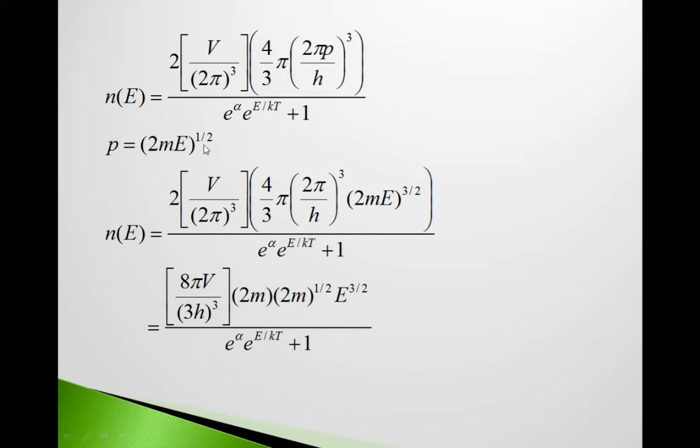This p = (2mE)^(1/2). So n = 2V/(2π)³ × 4/3 π(2π/ℏ)³(2mE)^(3/2) / (e^(α+E/kT)+1). Simplifying this we get 8πV/(h³) × (2m)^(3/2) E^(1/2) / (e^(α+E/kT)+1).